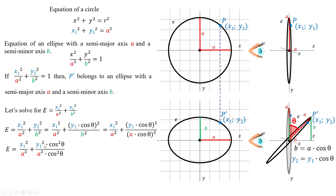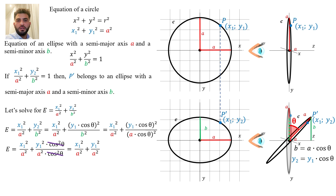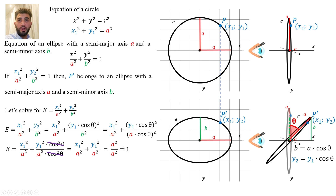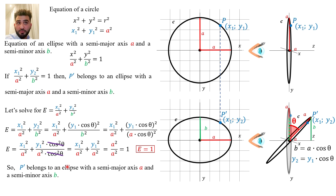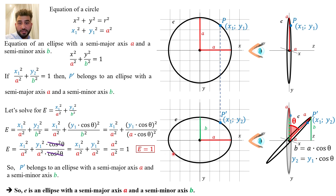So let's develop this. It becomes x1 squared over a squared plus y1 squared times cosine squared theta over a squared times cosine squared theta. We can notice that cosine squared theta appears as a common factor in the numerator and denominator, so we can cancel them. This becomes x1 squared over a squared plus y1 squared over a squared. You remember what x1 squared plus y1 squared gives us? It gives a squared. So replacing, this gives a squared over a squared, which equals 1. So E equals 1. Since this equation equals 1, we can conclude that P' belongs to an ellipse with semi-major axis A and semi-minor axis B, and so E is an ellipse.